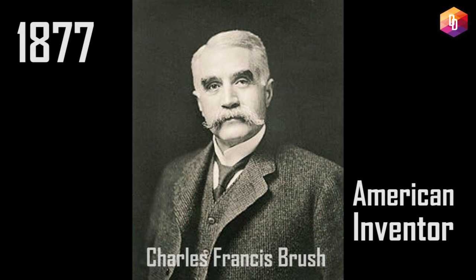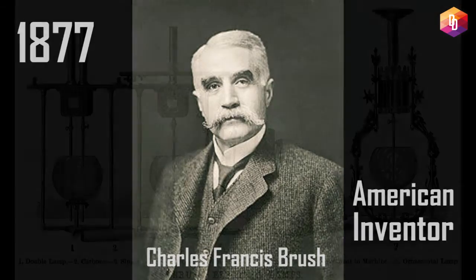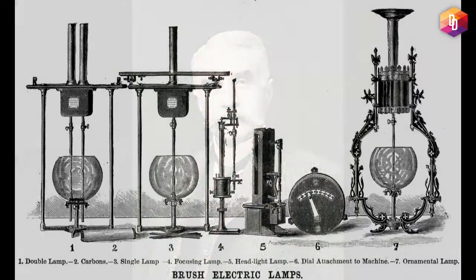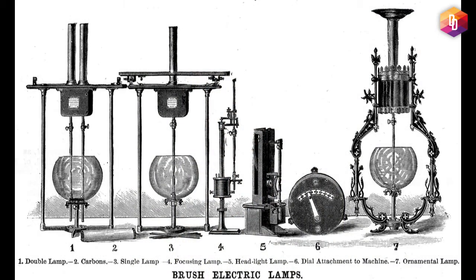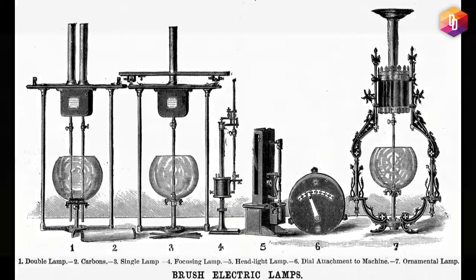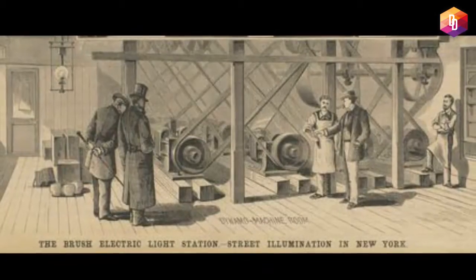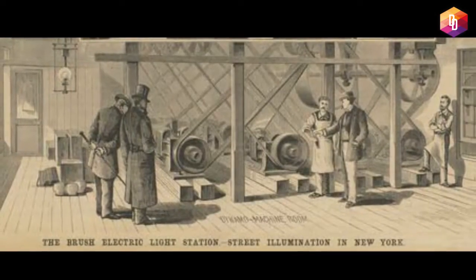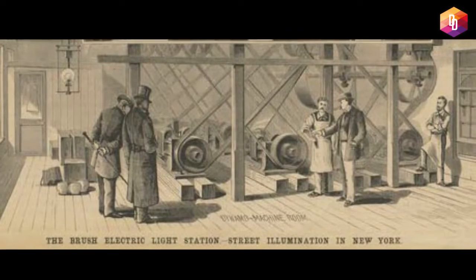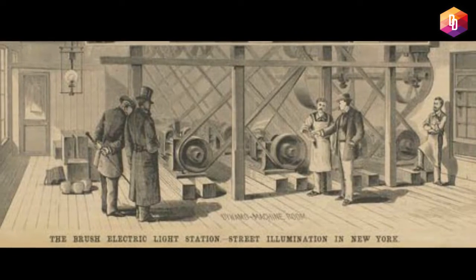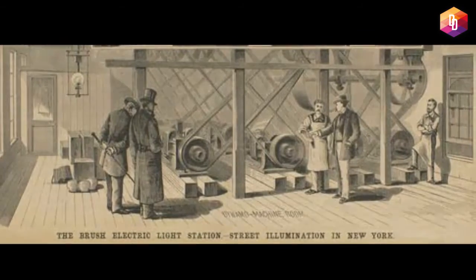In 1877, the American Charles Francis Brush manufactured some carbon arc lamps to light a public square in Cleveland, Ohio, USA. This arc lighting was used on a few streets, in a few large office buildings, and even some stores. However, electric lights were only used by a few people.